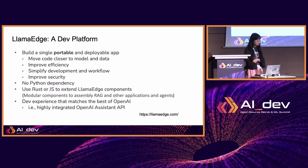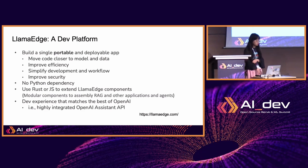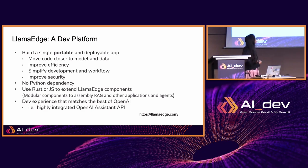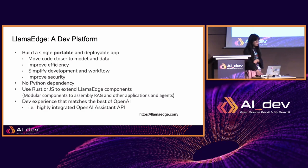LlamaEdge is not the same as llama.cpp. With LlamaEdge, it does not only support large language models but also AI models like OpenVINO and others — it's more like a developer platform. You can use it to build a single, portable, deployable app and move your code closer to your model and data, improving efficiency and security. There's no Python dependency, and you can extend components with JavaScript as well. It gives you an OpenAI-compatible API that you can call in your own AI application.